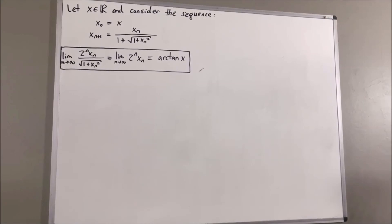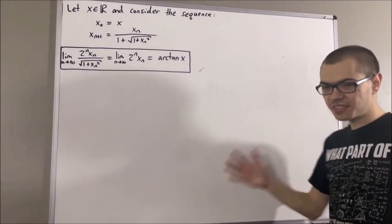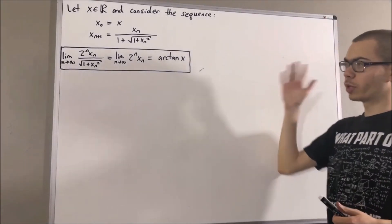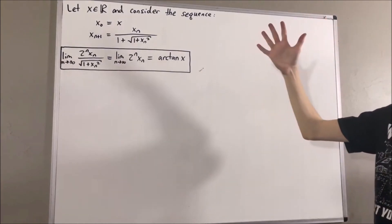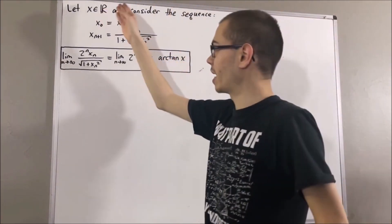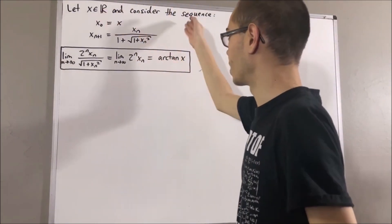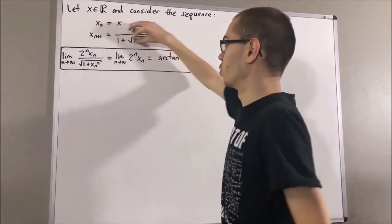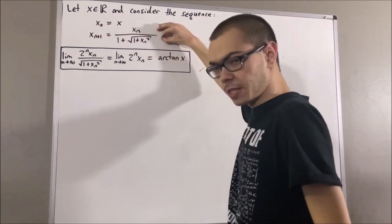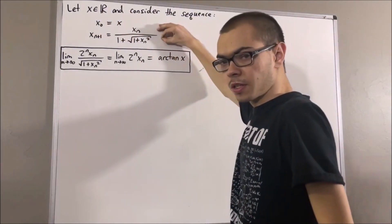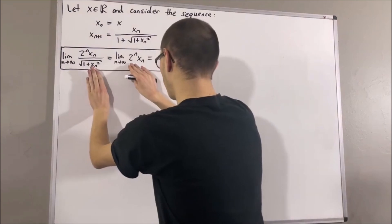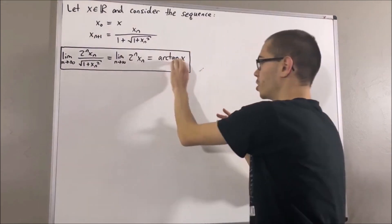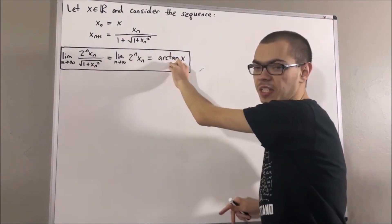Hello. In this video, we are going to discuss the arctangent of x. So let x be any real number and consider the following sequence. It turns out these two sequences both converge to the arctangent of x.